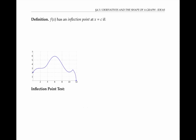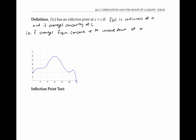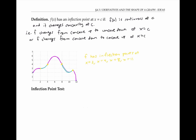Next, let's talk about inflection points. A function has an inflection point at x equals c if it's continuous at c and it changes concavity at c. In this graph, if we draw the concavity regions, we see that f has an inflection point at x equals two, where the function changes from concave down to concave up; at x equals four, where the function changes from concave up to concave down; at x equals eight; and again at x equals 11. Since concavity has to do with the second derivative being positive or negative, inflection points happen where the second derivative changes sign from positive to negative, or from negative to positive.